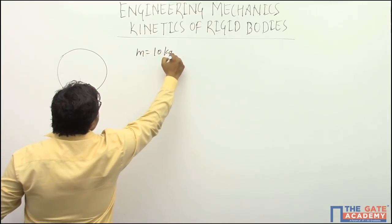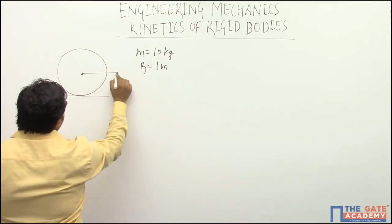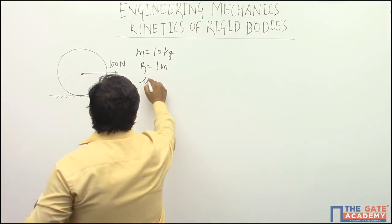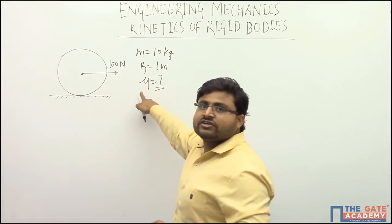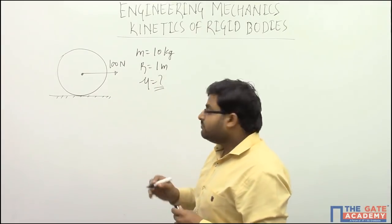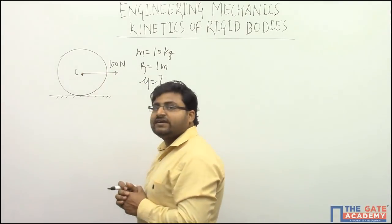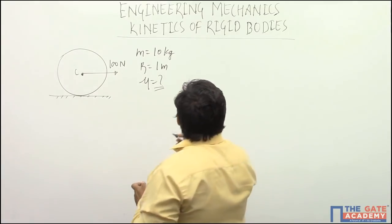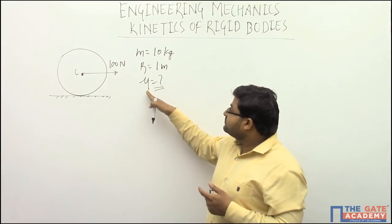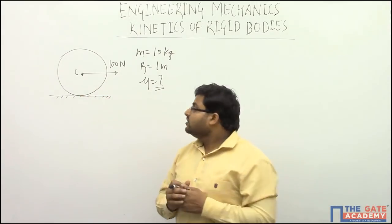The given data is: disc of mass 10 kg, radius 1 meter, and a force of 100 Newton applied at the center. There is no information about mu, the coefficient of friction. To get the linear acceleration of the center, mu is normally required. However, since this is pure rolling, and pure rolling without friction is not possible, there must be some friction present.